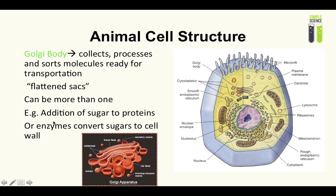An example would be the addition of sugar to a protein to form a glycoprotein, or the removal of amino acids to form a functional protein. In plants, enzymes can convert sugars to build the cell wall.